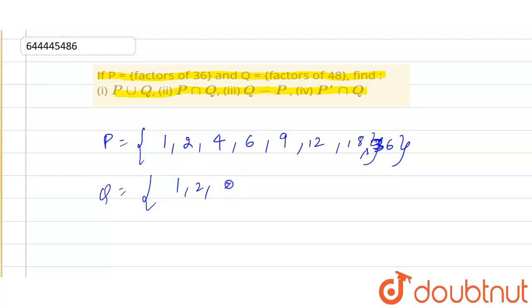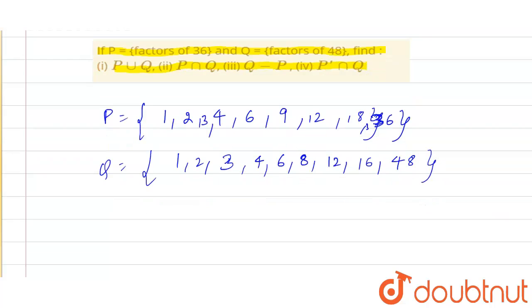Q equals factors of 48. That is 1, 2, also divisible by 3, also with 4, not by 5, also with 6, not by 7, also with 8, not by 9, 10, 11, but also by 12, not by 13, 14, 15, but also by 16, not by 17, 18, 19, 20, 21, and last is 48 itself.